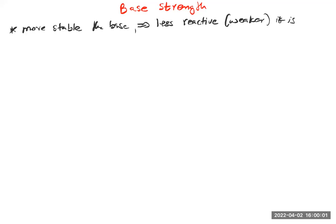Let's start with Feature One. Feature One is about the charge-bearing atom. Sometimes in bases we do not have a negative charge — we have a lone pair instead. So we can call this the nature of the charge or lone pair bearing atom.